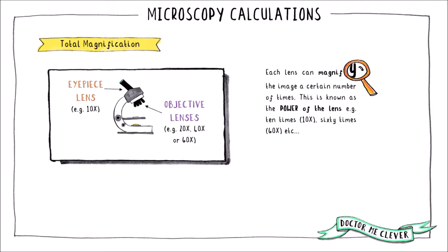For example, the eyepiece lens usually has a magnifying power of 10 times and the objective lenses range in magnifying power from 4 times to 60 times usually.